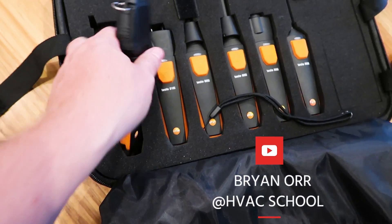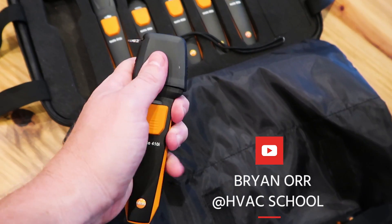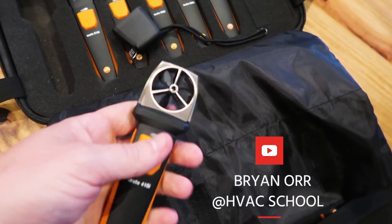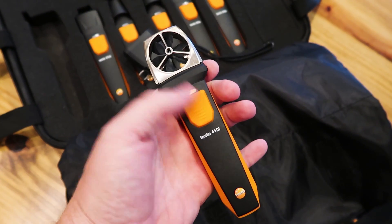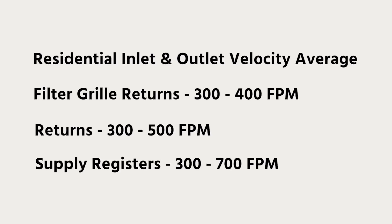Hi, I'm Brian Orr with the HVAC School Podcast. I'm doing this video to show you the Testo 410i and how you can use it to measure velocity and then convert that into volume flow. In general, in a residential air conditioning supply duct, we want to see velocities anywhere from 300 feet per minute to about 700 feet per minute.